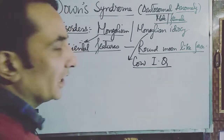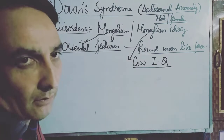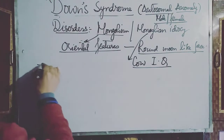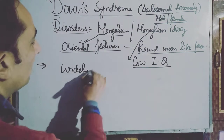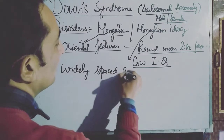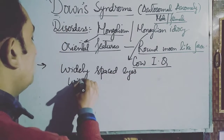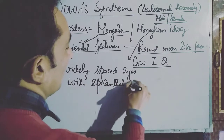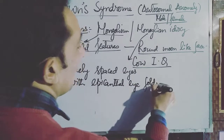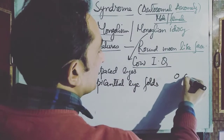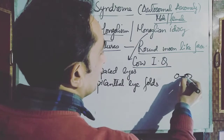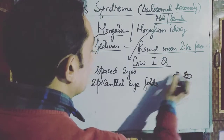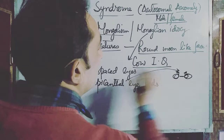The term idiocy is used because persons suffering from this disorder have low IQ — low intelligence coefficient — and their mental faculties are not fully developed. Another disorder is that they have widely spaced eyes with epicanthal eye folds, meaning the space between their eyes is more than normal, with some folds in their eyelids.